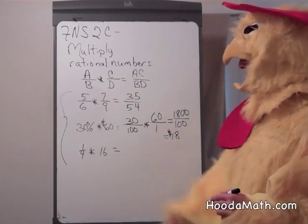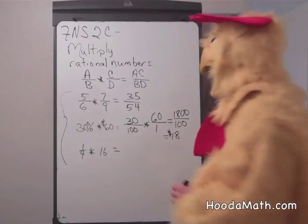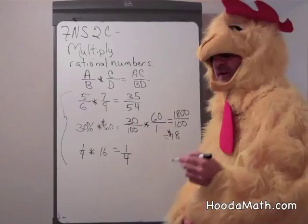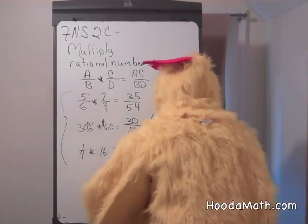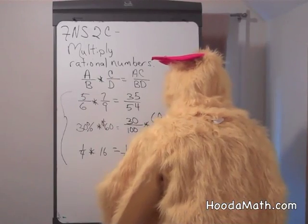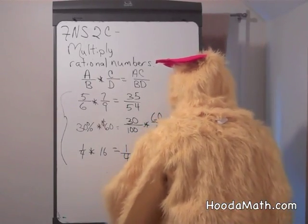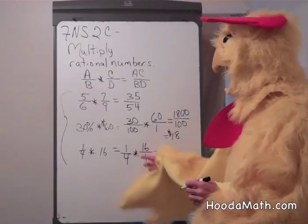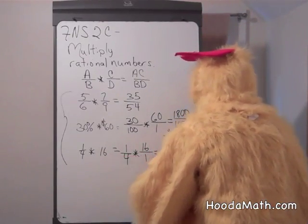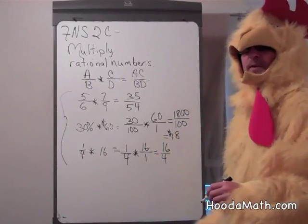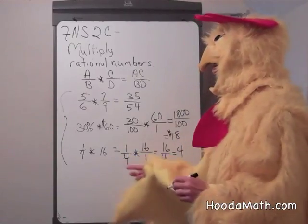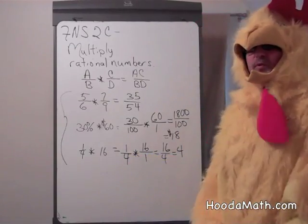And finally, one-fourth of sixteen. One-fourth is already written as a fraction or ratio, and once again, a whole number can be written as that number over one or divided by one. Sixteen times one is sixteen. Four times one is four. Sixteen divided by four is four. So one-fourth times sixteen equals four.